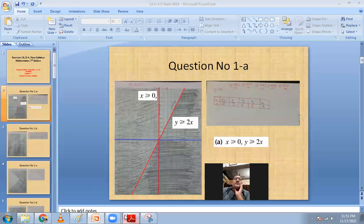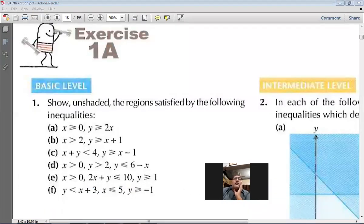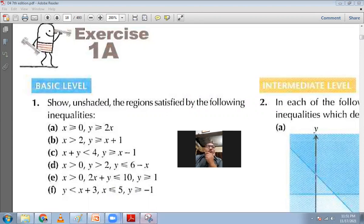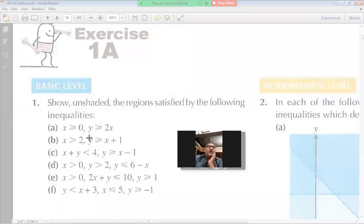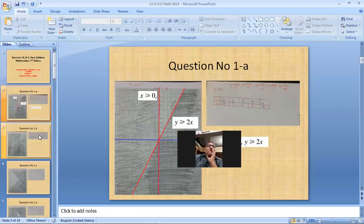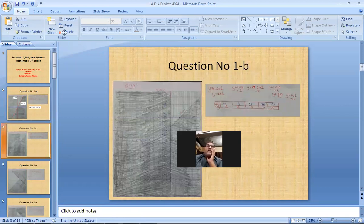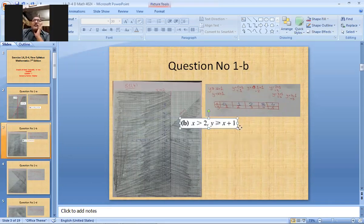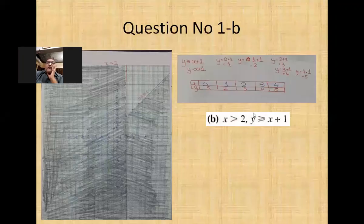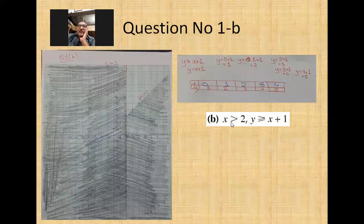The next question is coming up on your screen — question number one, part b. It says: show unshaded the region satisfied by the following inequalities. I will copy and show the b part here.